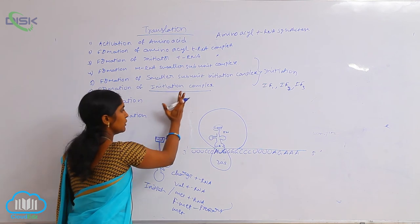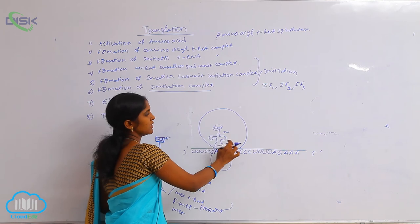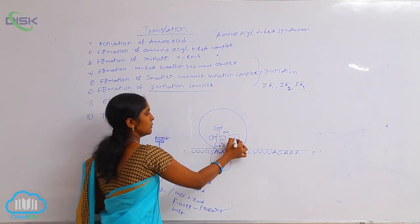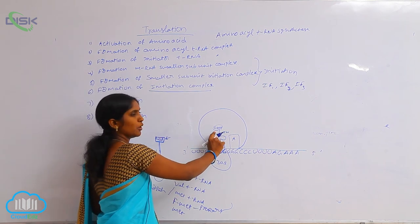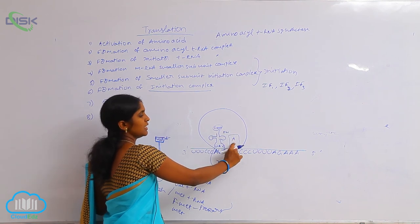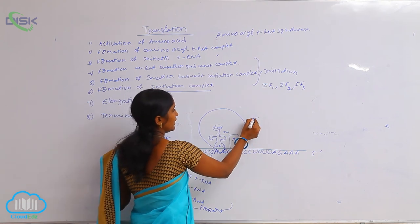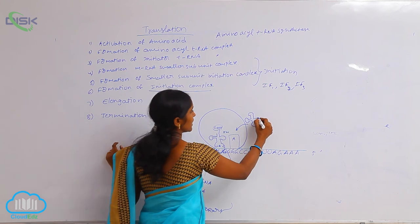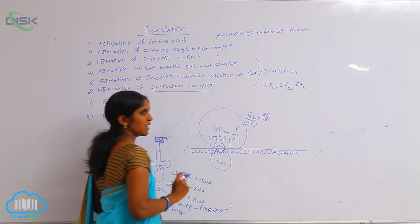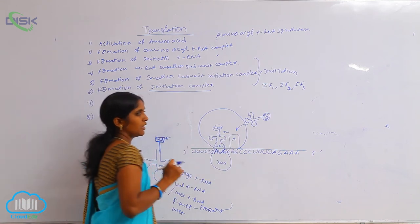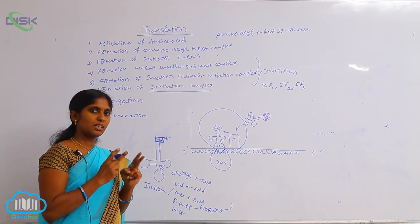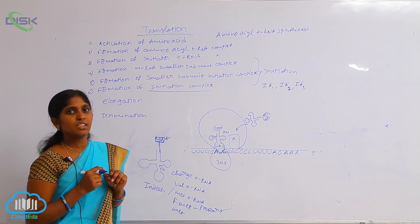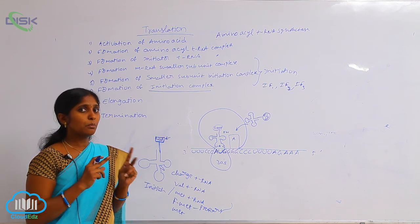Next is elongation. The ribosome larger subunit consists of two sites: one is the P site (polypeptide site) and another is the A site (amino acid site). At the polypeptide site, formyl methionine is present. According to the genetic information of mRNA, at the amino acid site another amino acyl tRNA joins. According to codon GGG, glycine tRNA is added. When these two amino acids are very near, peptide bonds are produced by the enzyme peptidyl transferase.